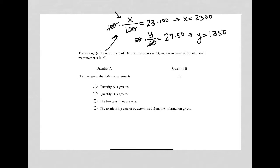Okay, so now let's look at the actual question. Quantity A, the average of the 150 measurements. Well, how do I find that? How do I find the average of the 150 measurements? Well, it's going to be the sum of all those x values plus the sum of all those y values divided by the total number of measurements we have now, which is 150.